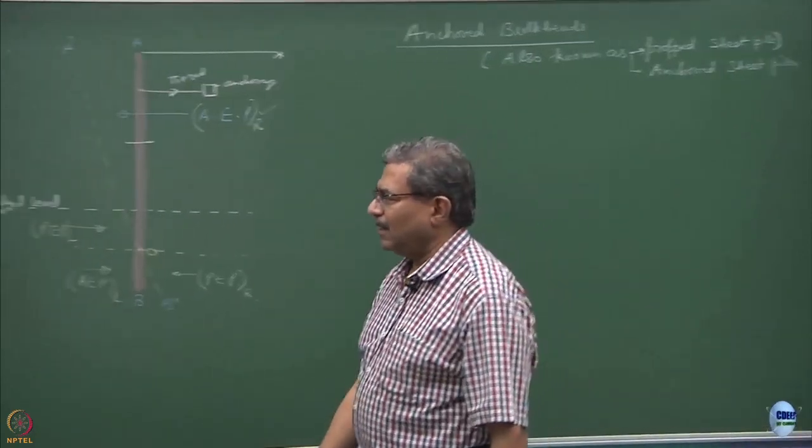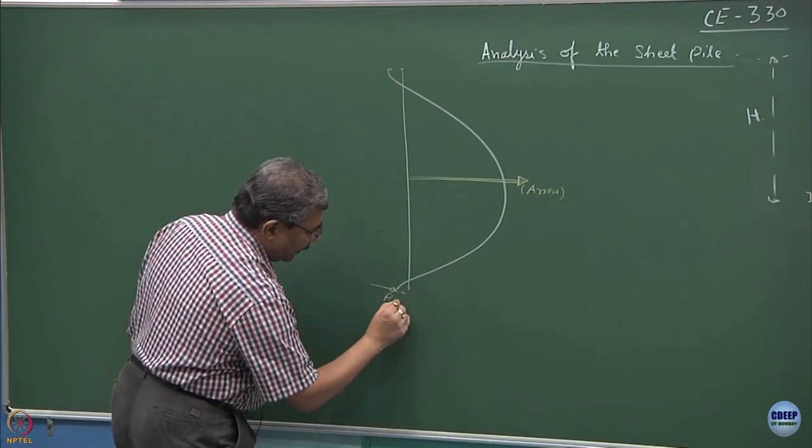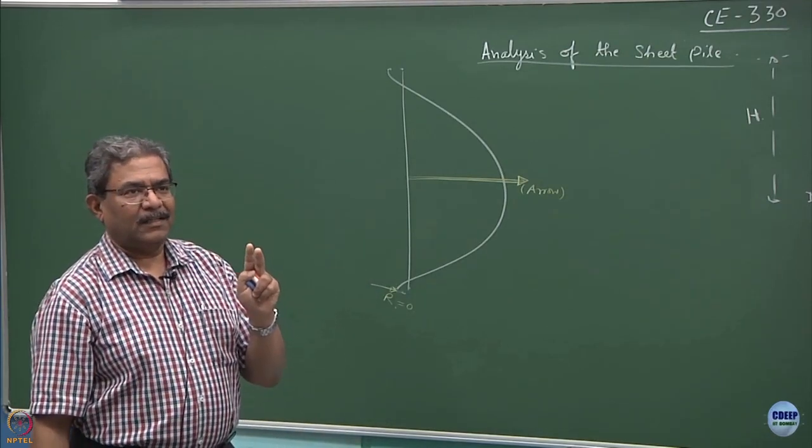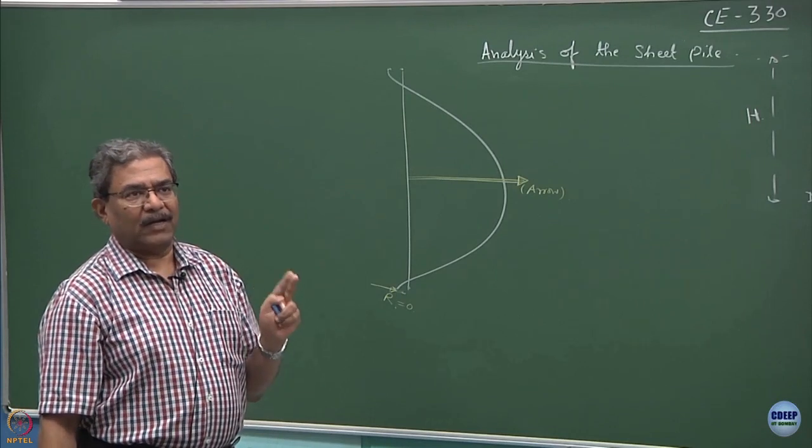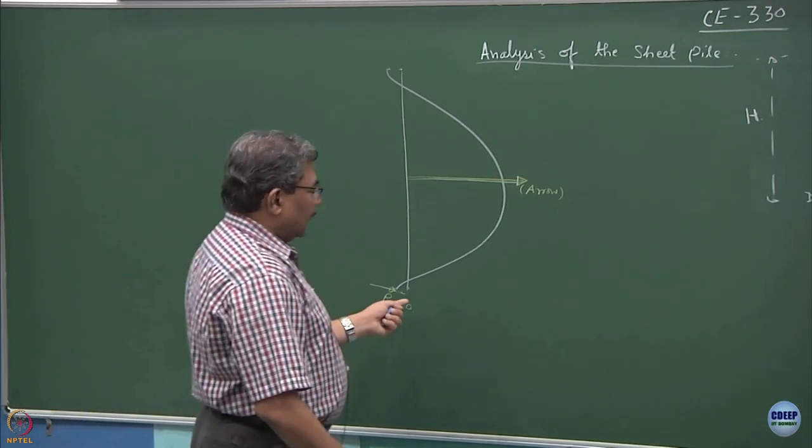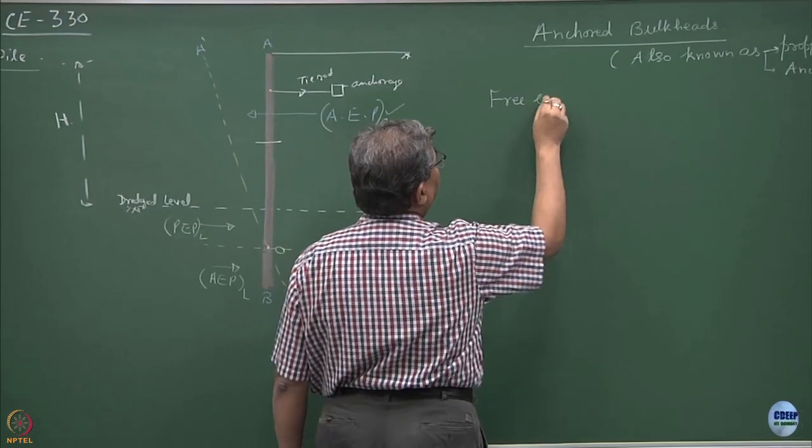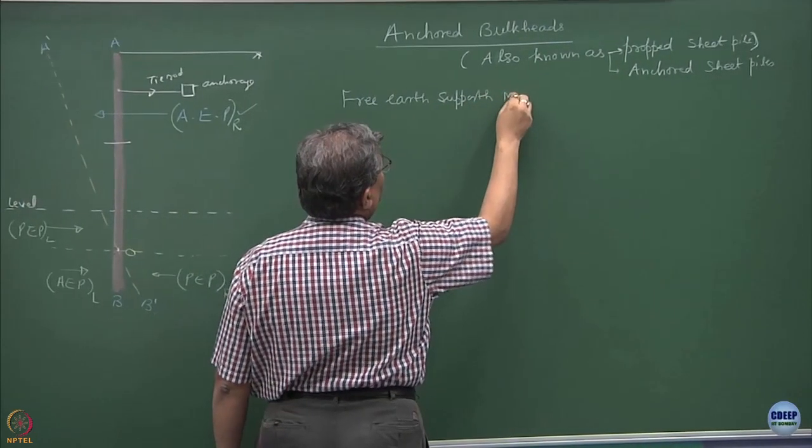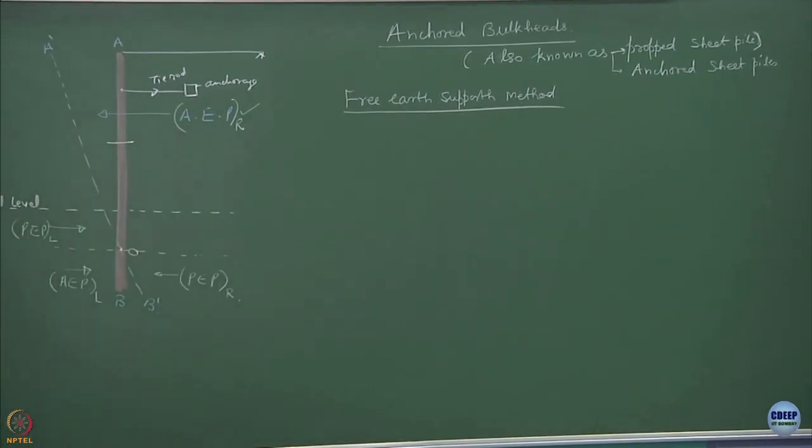In the second situation, we do not apply any constraint over here, there is no restraint for the motion or the movement and we say r equal to 0. So, depending upon these two logics, two methods have been created for analyzing the propped sheet piles or anchored bulkheads. The second one which I have talked about here is known as a free earth support method and the first one which I talked about is known as fixed earth support method.